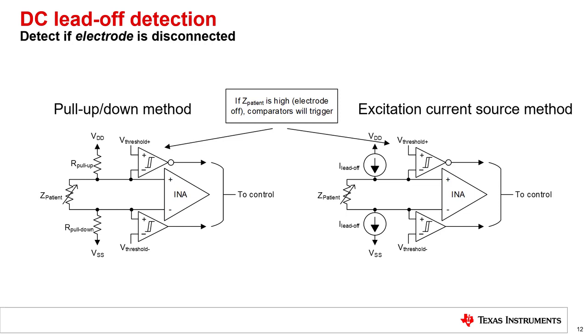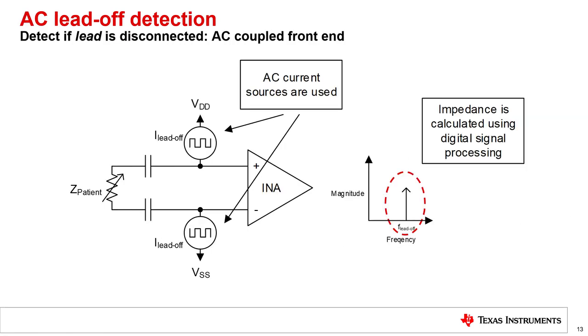On the right we have a current source leadoff detection which works similarly but instead of using a pull-up or down resistor it uses an excitation current source. The same principle applies: when the impedance becomes too large, the voltage at the inputs of the comparators will cause them to trigger, indicating leadoff to the user. Since each INA input is connected to a separate comparator, the status of each individual electrode can be monitored at all times. The output of these comparators can be tied to a microprocessor for instant notification.